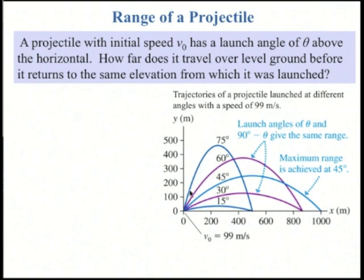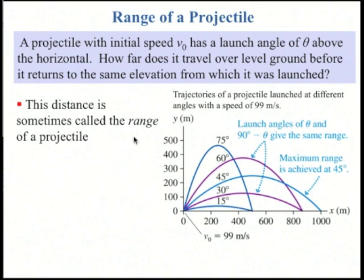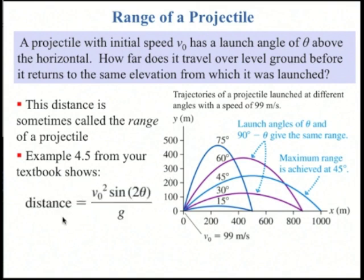So let's talk about range. If you have a projectile with some fixed initial speed, v sub 0, but you can vary the launch angle theta, how far does the object travel over level ground before it returns to the same elevation from which it landed? And this distance is sometimes called the range. So if you look in your text and read example 4.5, they derive that this distance turns out to be v sub 0 squared times the sine of 2 times the launch angle divided by g. And if you vary theta between 0, which would be straight into the ground, and 90 degrees, which would be straight up, you'll find that sine of twice of theta has a maximum when theta is 45 degrees.